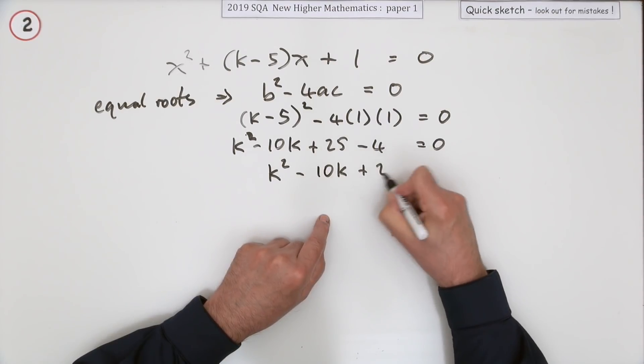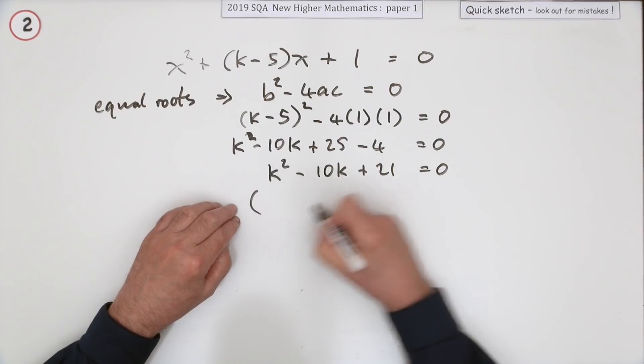Tidy it up so you can get a proper two instead of that smudge, and that's plus 21. Almost there. Now you've got another quadratic.